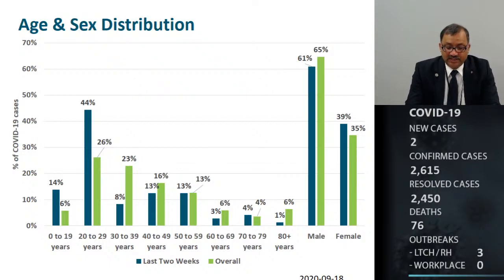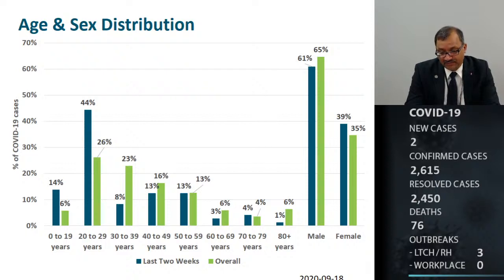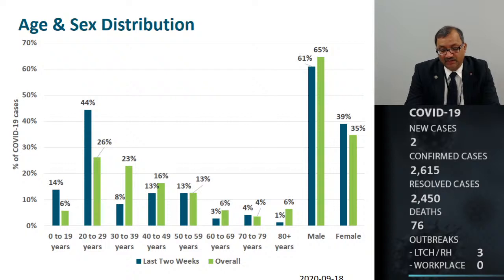Looking at overall cases by age and sex over the past two weeks, we have seen more male cases compared to females overall, but in the past two weeks this number is disproportionately higher in females. We have seen a large number of children between 0 to 19 who contracted COVID-19 in the past two weeks, along with younger adults between 20 to 29 years of age, compared to what we have seen overall since the beginning of this pandemic. There is a shift — younger people in our region are now getting more of these cases.